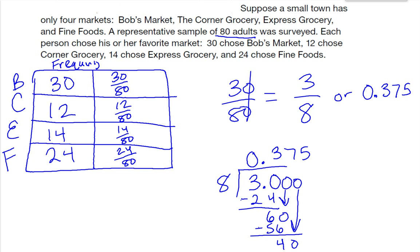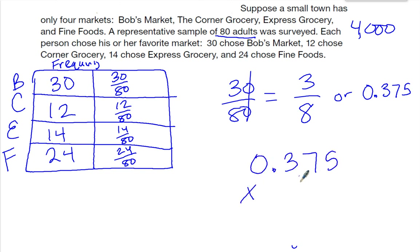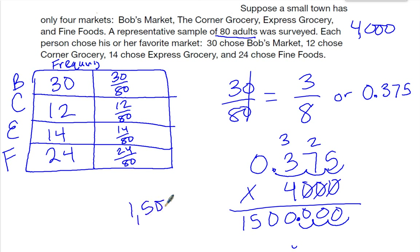Now, if I had asked 4,000 adults which market was their favorite, the way I'd figure out how many would say Bob's was their favorite is I would take 4,000 and multiply it by my decimal. So 0.375 times 4,000. I can drop the zeros and cross them off. 4 times 5 is 20, carry the 2. 4 times 7 is 28, plus 2 is 30, carry the 3. 4 times 3 is 12, plus 3 is 15. Counting 3 decimal places, so out of 4,000 adults, about 1,500 should say that Bob's is their favorite.